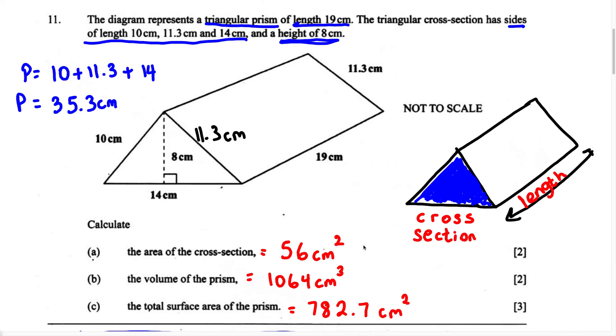This is how you solve a problem when given a triangular prism and asked to find the area of the cross section, the volume, and the total surface area of the prism.